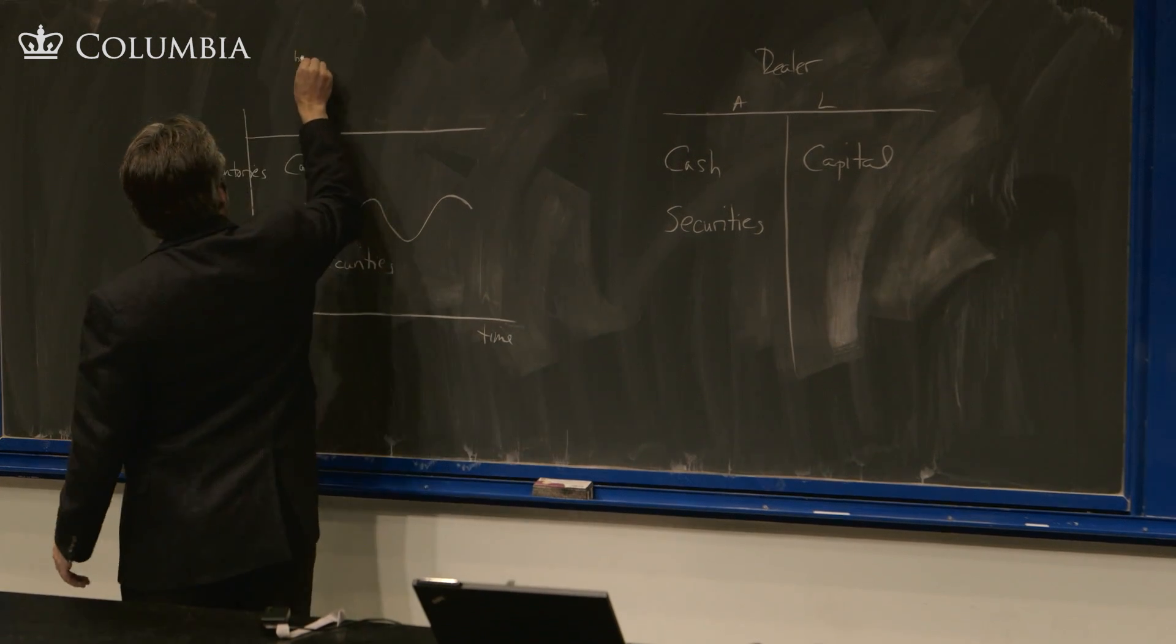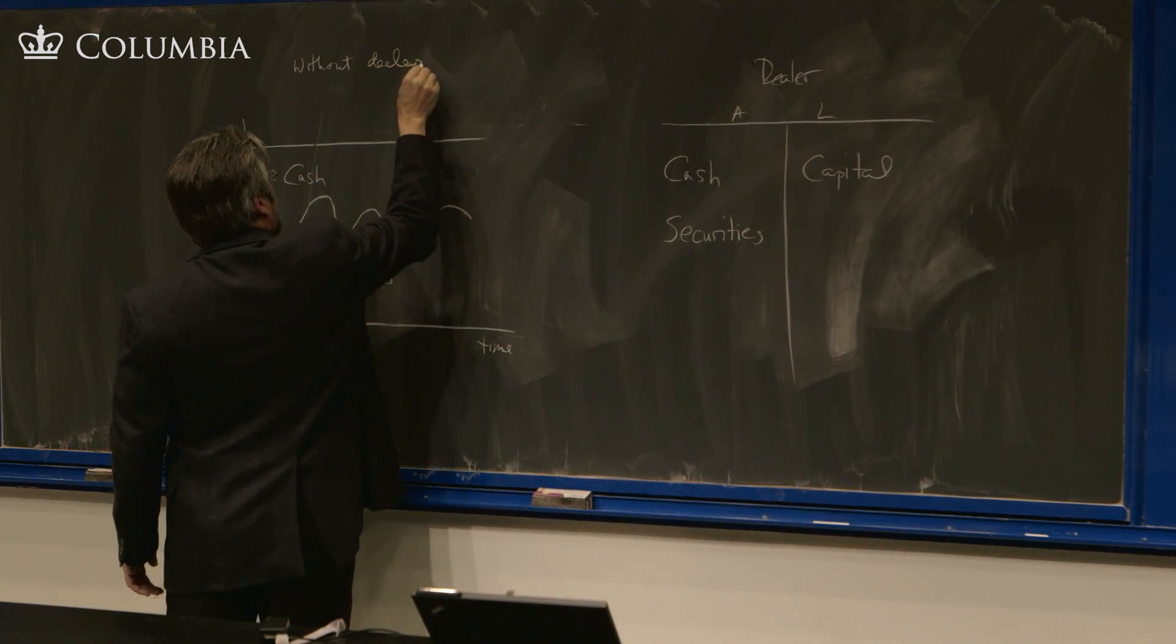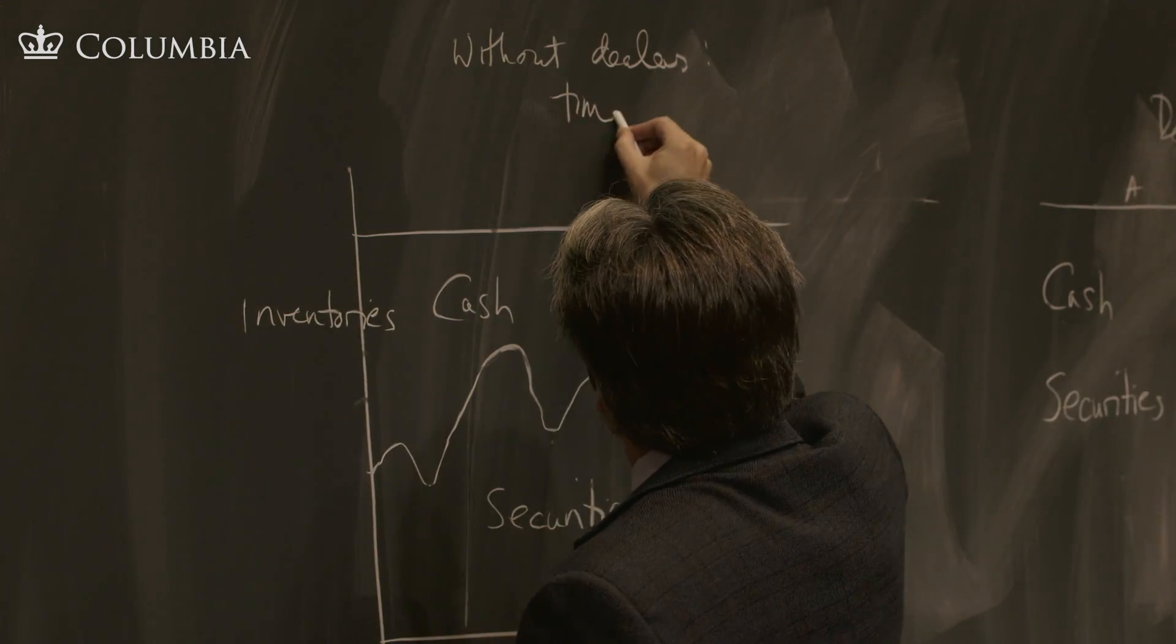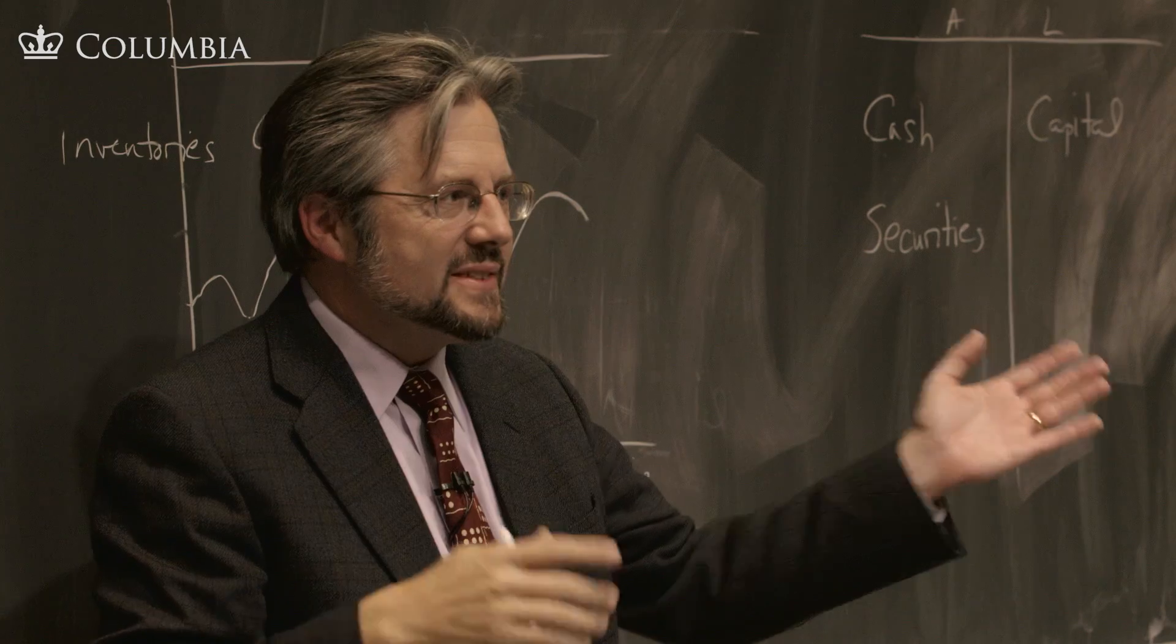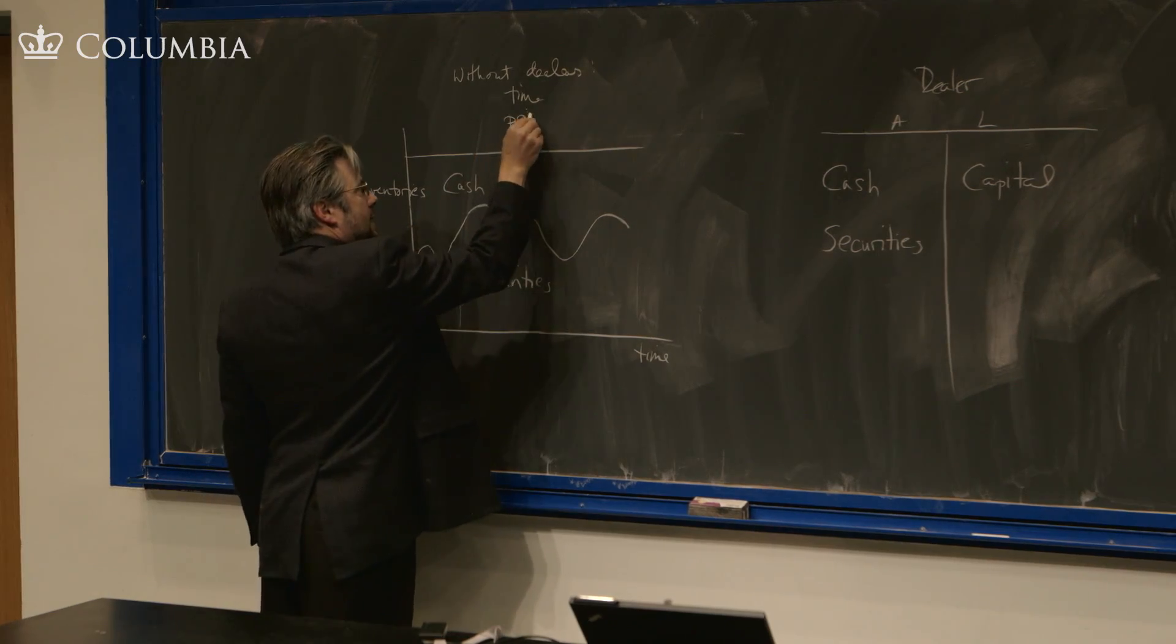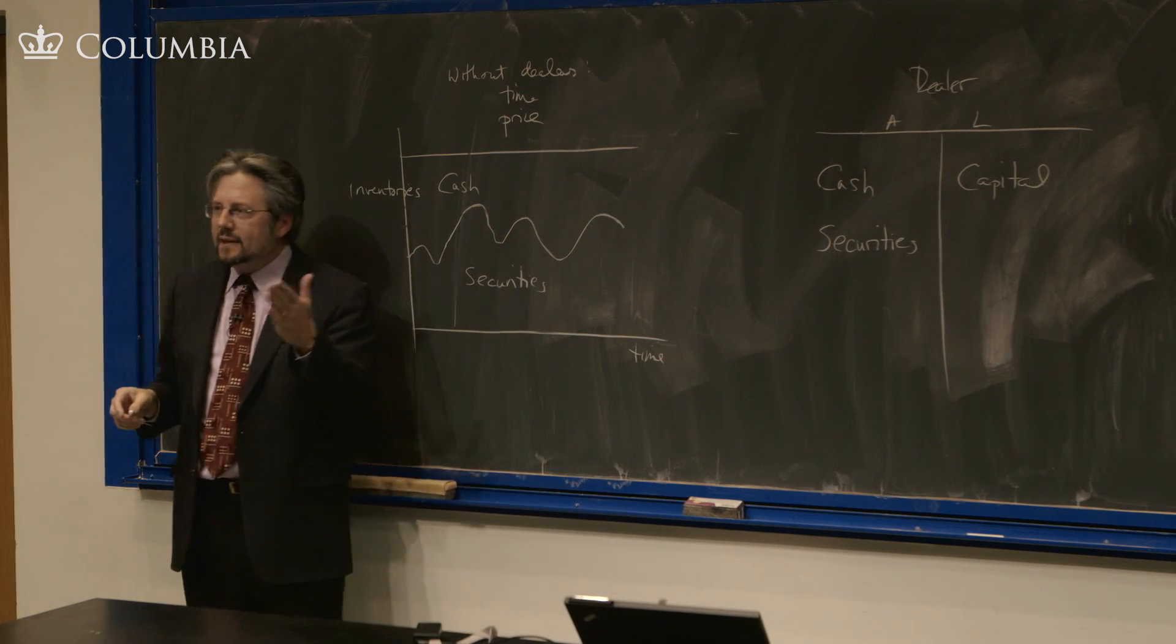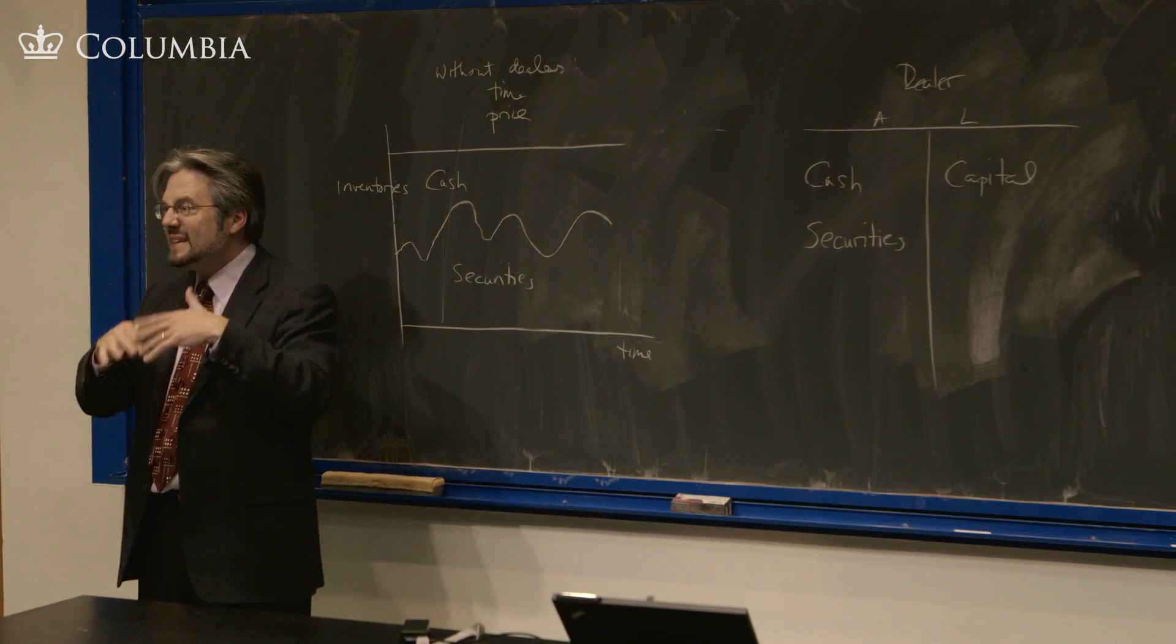So without the dealers, we've got this problem of time waiting. Demanders have to wait for suppliers or suppliers have to wait for demanders, depending on where the imbalance is. Or we have price - you have to use price in order to bring supply to you or to bring demand to you. So the price is going to...